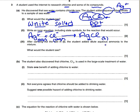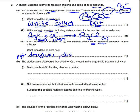After carrying out the test, the student added dilute aqueous ammonia to the mixture. What would the student see? The thing to remember is: when you have silver chloride and you add dilute aqueous ammonia, the precipitate dissolves. You can also describe it as it disappears, or that the solution goes clear.